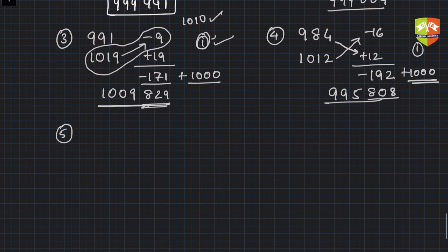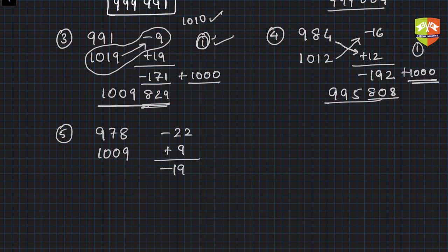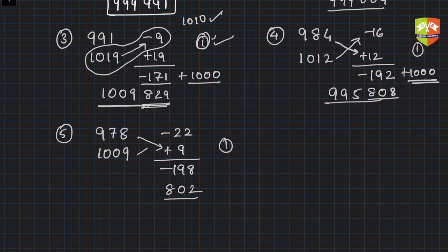One more: 978 times 1009. How far is 978 from 1000? Minus 22. And plus 9. So 22 times 9 is minus 198 — negative and positive — add thousand: you get 802. Now the diagonal: 978 plus 9 is 987, subtract 1 to get 986. So the product is 986,802.